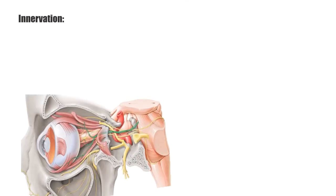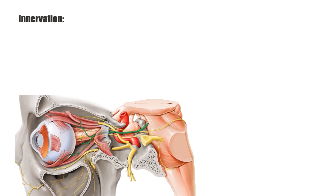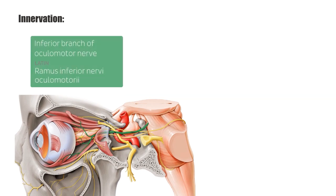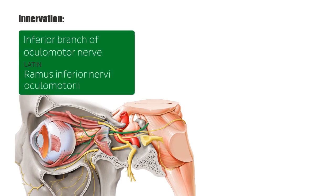Innervation of the medial rectus muscle is provided by the inferior branch of the ocular motor nerve, the third cranial nerve. The ocular motor nerve, shown in green, is shown here from a lateral view. The continuation of this branch innervates the medial rectus muscle on the medial aspect of the eye, not visible in this image.